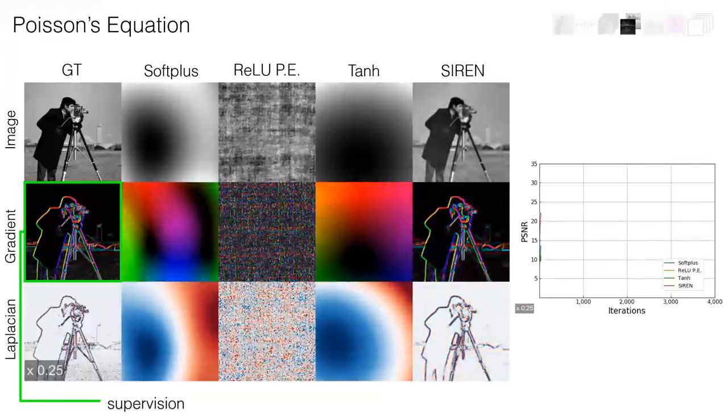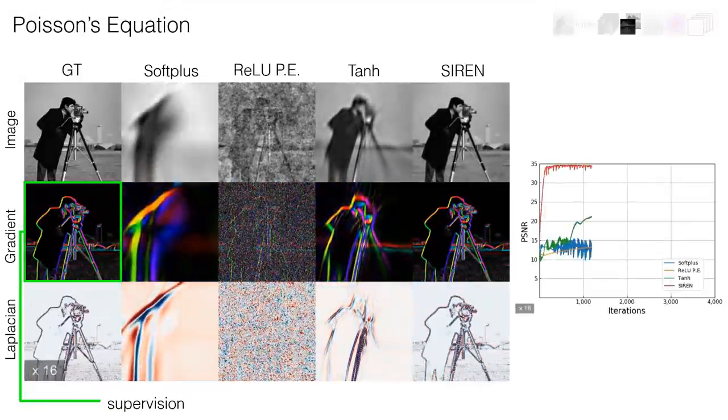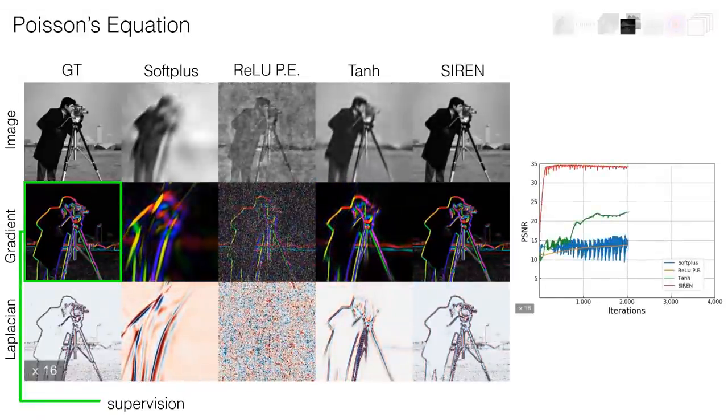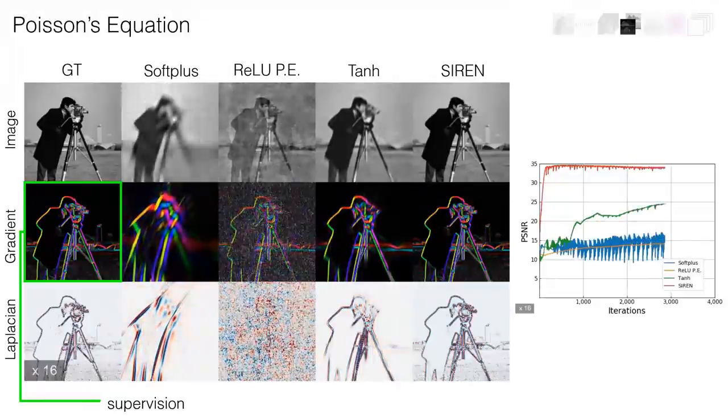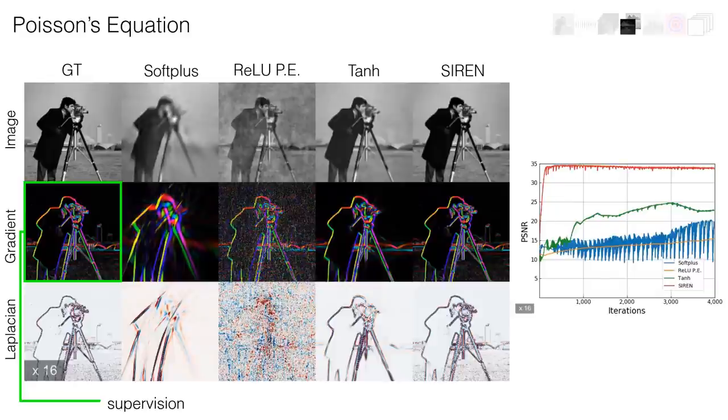Despite the fact that phi has never seen the image, only the gradients of phi have been supervised. This can be shown to be equivalent to solving a Poisson equation. Not only does SIREN reconstruct the image much more accurately than other approaches, it also converges much faster.